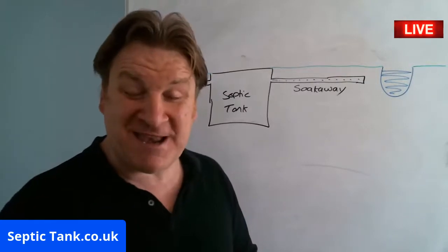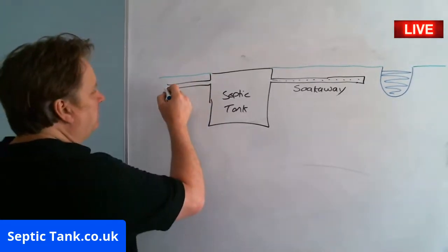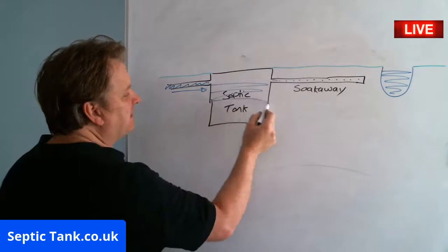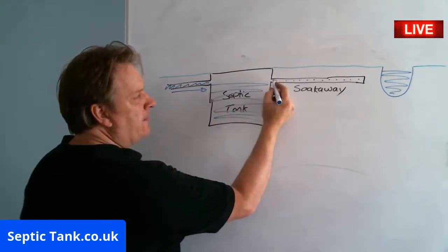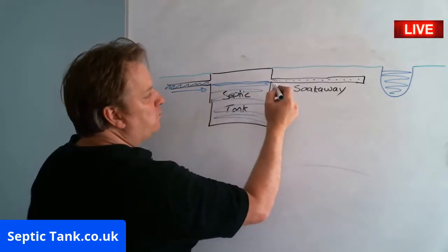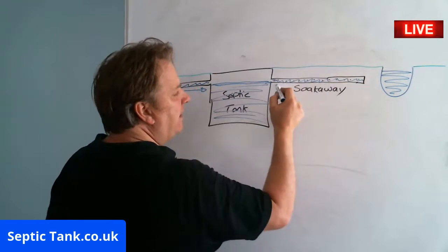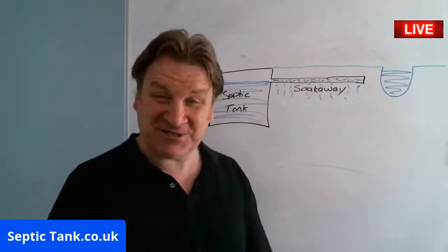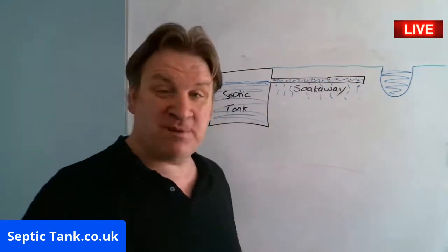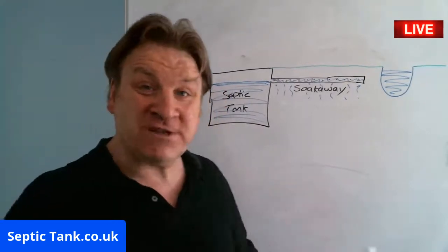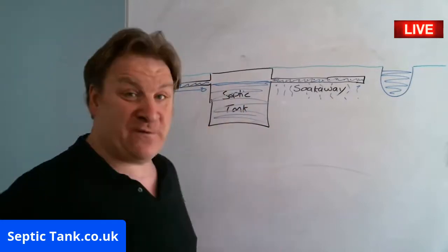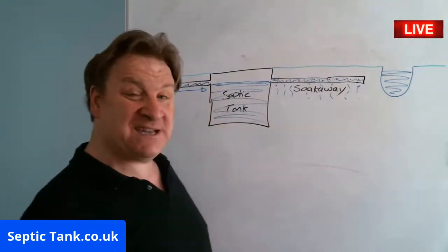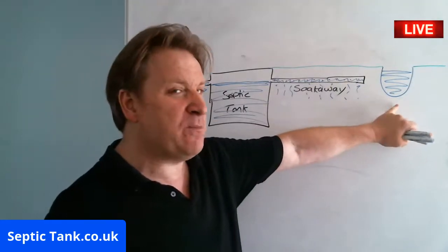Let me quickly explain how a septic tank works. Raw sewage in the form of wastewater goes into the septic tank. When it fills up to a certain level, the wastewater goes into the soakaway and drains away into the soil. The soakaway is probably the most important component because if the water didn't soak away, the tank would overflow and back up to the house.